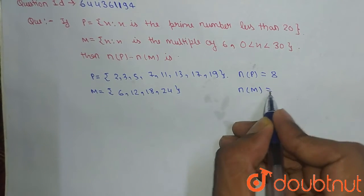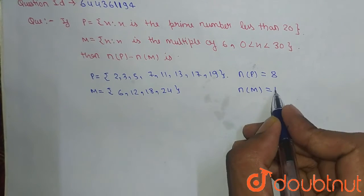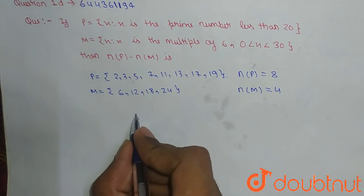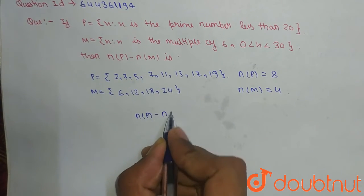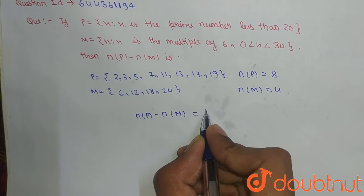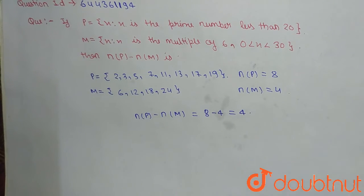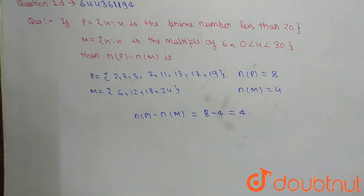And our n(M), counting the elements: 1, 2, 3, 4. So n(M) is 4. And we have to find the value of n(P) minus n(M). So this will be equal to 8 minus 4 which is equal to 4. So the answer of the given question is 4.